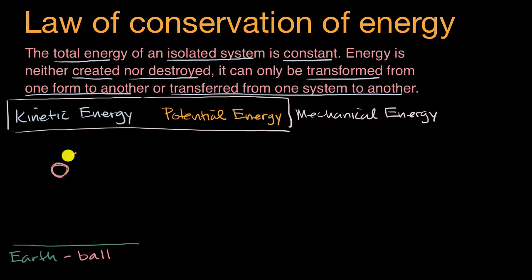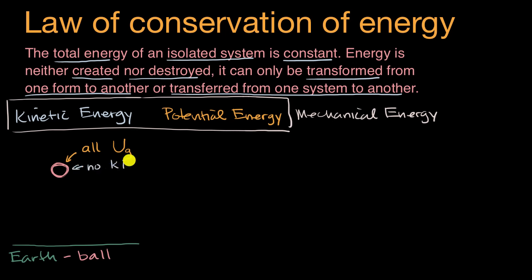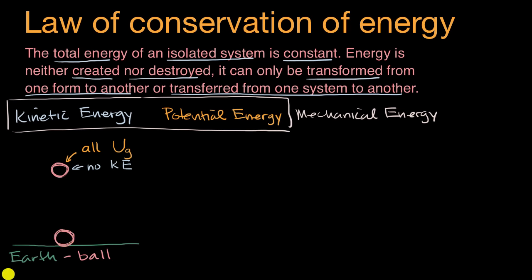While the ball is stationary, we have all potential energy — gravitational potential energy, symbol U — and no kinetic energy. If we thought about a broader system, the Earth is orbiting around the sun, but that's why we're specifying this is the Earth-ball system. What would happen if we let go of the ball? What is the energy profile of the ball right as it touches the ground?